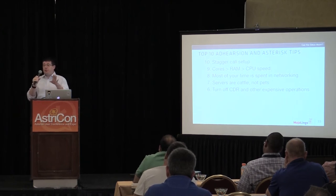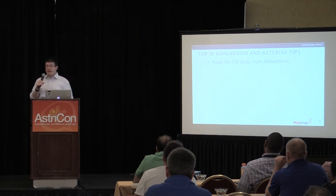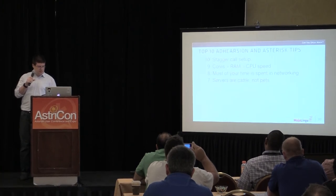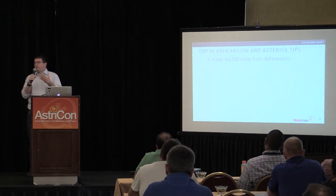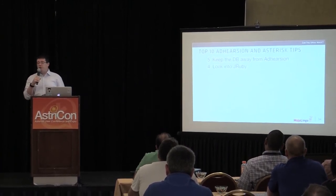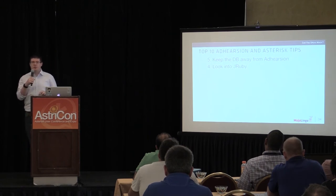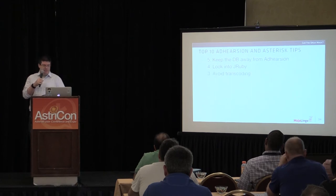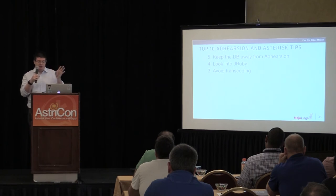Most Asterisk servers are loading modules and performing operations you don't need — be certain of that and clean them up. Keep the database away from Adhearsion — it's been a significant performance hit for us. Don't connect to the database with Adhearsion; it's no longer recommended and other methods are far better. Look into JRuby — we're running JRuby with great results. JRuby is a concurrent version of Ruby running on the JVM, currently in testing, improving application performance by a few percent. Avoid transcoding — make sure you're not transcoding media anywhere. Just run G.711 and let the network handle it.